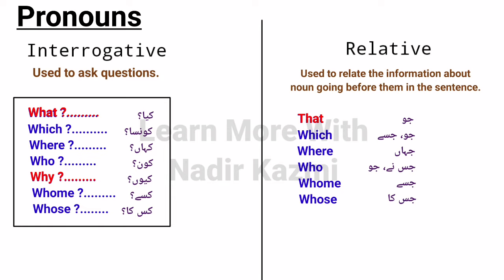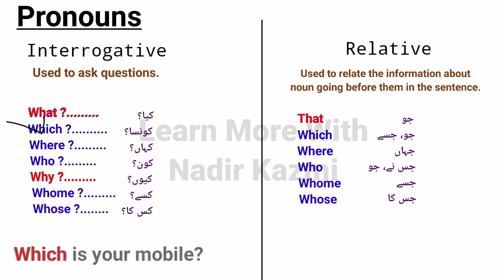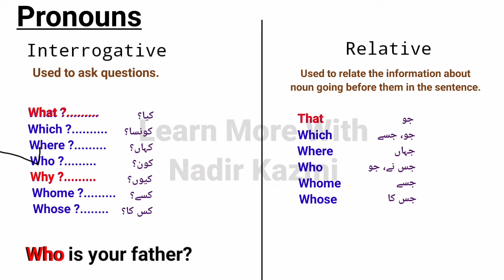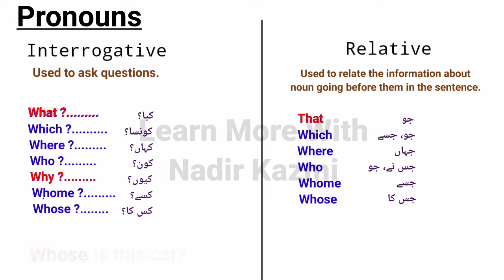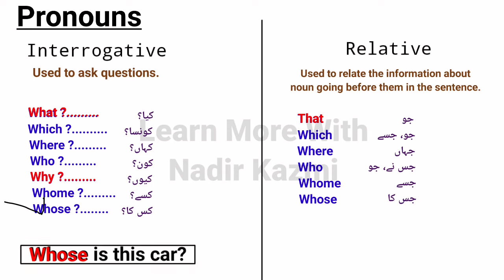Interrogative pronoun examples: 'What is your name?' — 'Which is your mobile?' — 'Where is your home?' — 'Who is your father?' — 'Why is your dress dirty?' — 'Whom did you tell this?' — 'Whose is this car?' You can see that all these pronouns are used to ask questions, forming interrogative sentences. Whenever these are used, those sentences are called interrogative sentences and are always followed by a question mark.